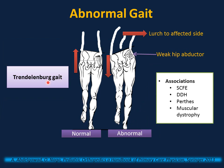Trendelenburg gait is limping because of weakness of the abductor muscles. In a normal person during a single limb stance phase, the abductors are able to support the pelvis on the opposite side and maintain a level pelvis. In a person with weak abductor muscles on the stance side, the abductors are unable to support the opposite pelvis, and the pelvis will drop. To compensate, the trunk will shift weight to the affected side to maintain balance — this is called lurch.